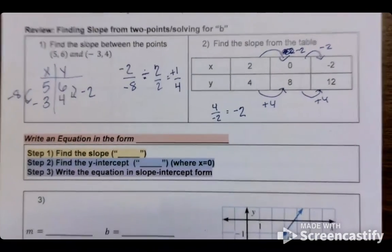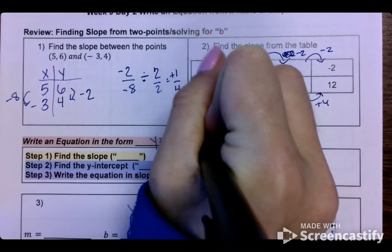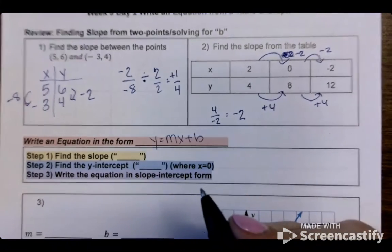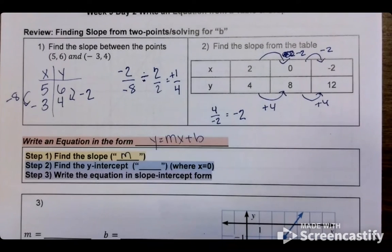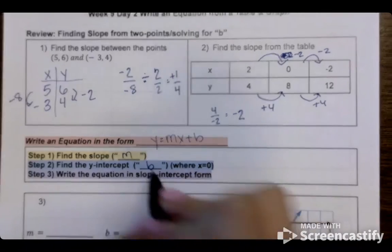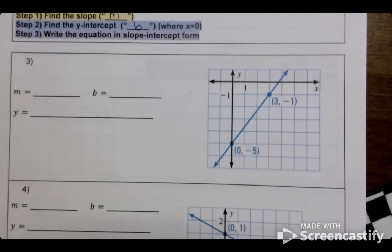Alright, our equation is always going to be in the form y equals mx plus b. We will first find the slope. Which letter in that equation is slope? M. Then we will find the y-intercept, which is b. Alright, we did this already last week.